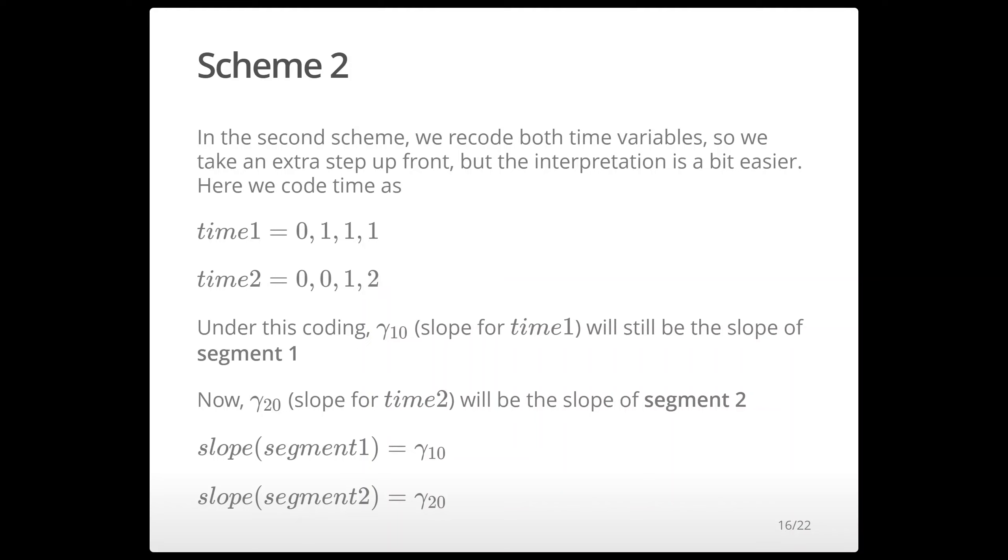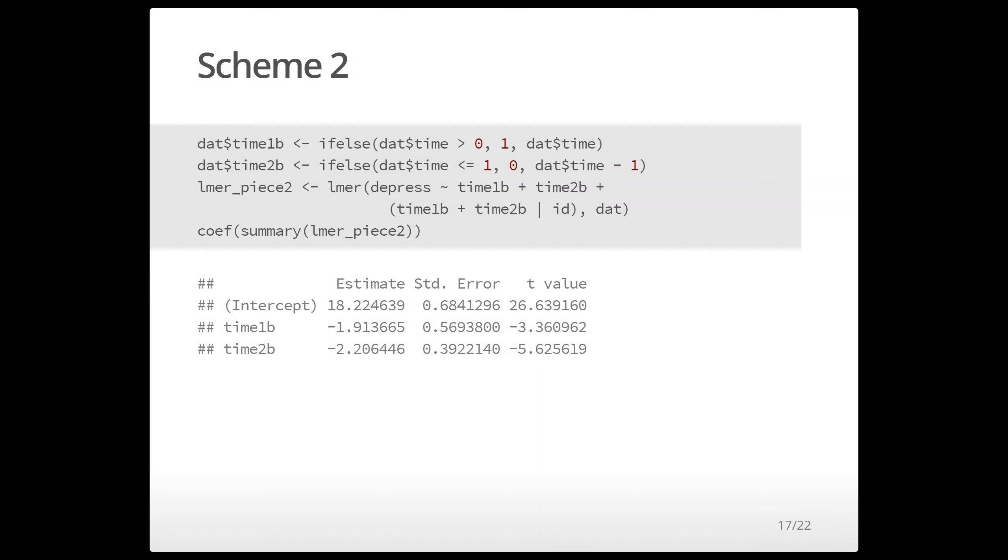So you do have to recode both variables if you do that, but if you do it this way both parameters each individually represent the slope of each segment so it's a little bit easier to interpret. So the first segment is the first parameter, the second segment is the second parameter. So here I code this up and we can look a little bit more at how I coded this in the book together in lab.